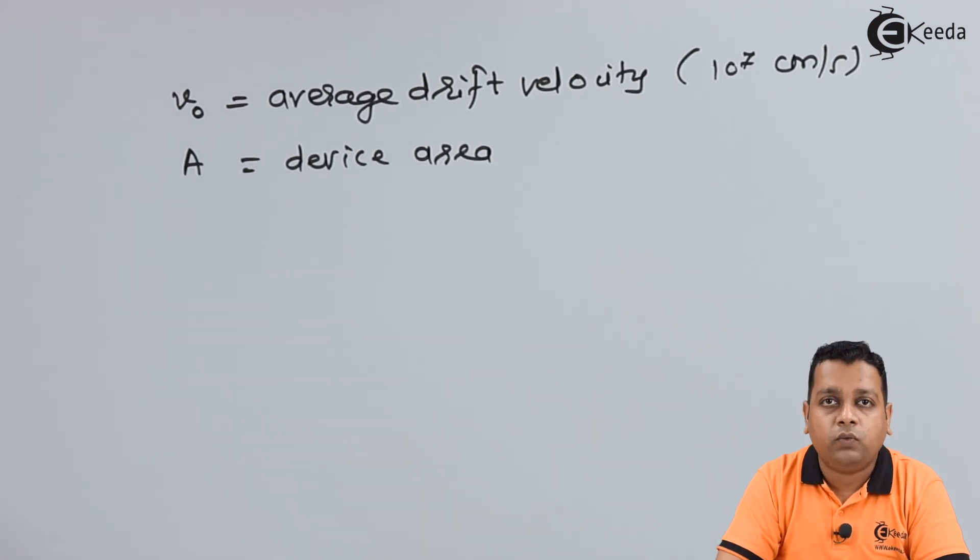Lastly we have the representation of capital A, and this is called the device area. We can have one comment with respect to this particular diode. The designing of the diode, we can select the doping concentration N0 with respect to the desired value of the operating frequency F0 at the resonance frequency. So this was all about the LSA diode.